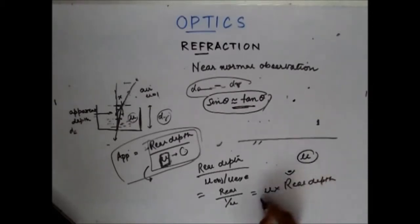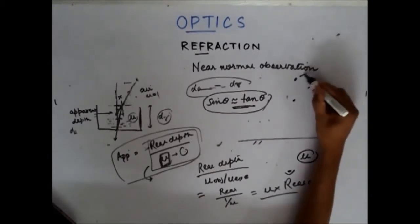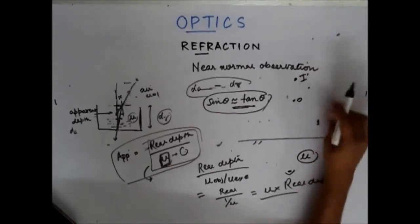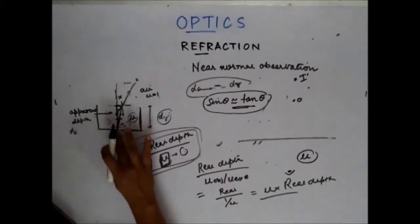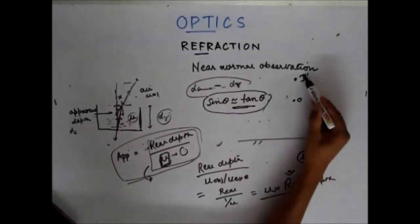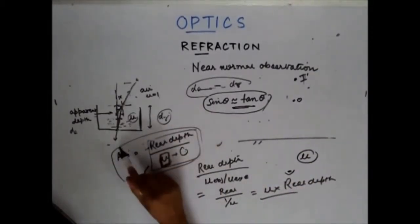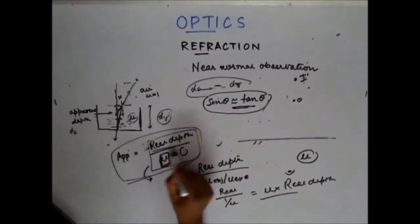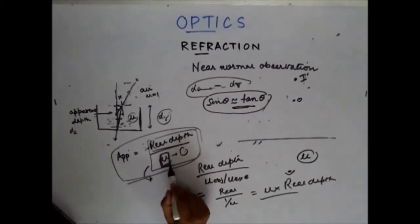So when the object is in the rarer medium, the object appears to shift away from the surface. To recall: when the object is in the denser medium, it appears to move towards the surface; when in the rarer medium, it appears to move away from the surface. The formula is: apparent depth = real depth / mu, where mu is the refractive index of the medium in which the object lies with respect to the refractive index of the medium in which my eye is.